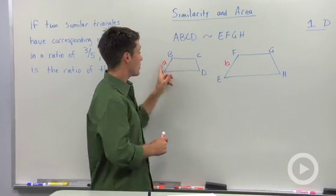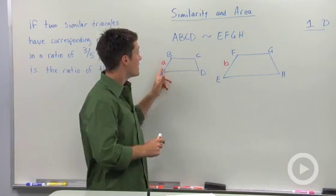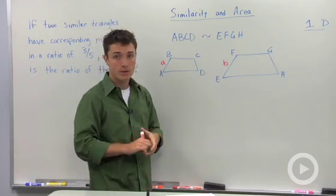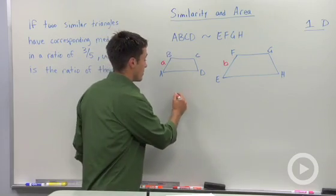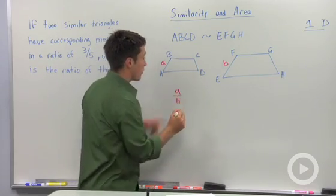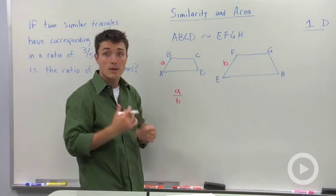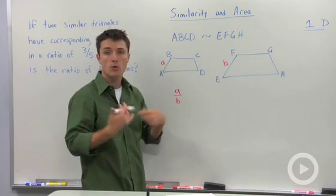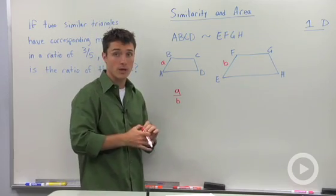And if I picked one of their corresponding sides, that is AB and EF, I know that that ratio is going to be constant for all of the corresponding sides. That ratio will be A to B, or whatever those numbers are for their actual lengths.